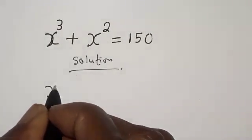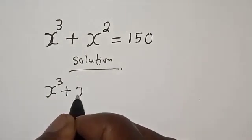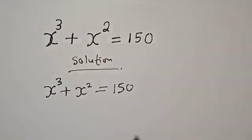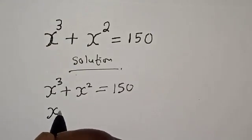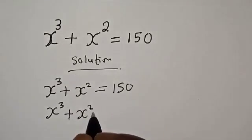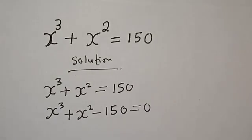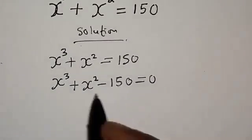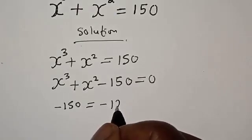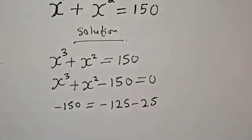Solution: we have the given equation s cubed plus s squared is equal to 150. Then we have s cubed plus s squared minus 150 is equal to 0. Now, 150 can be written as 125 plus 25, so we have minus 125 minus 25.